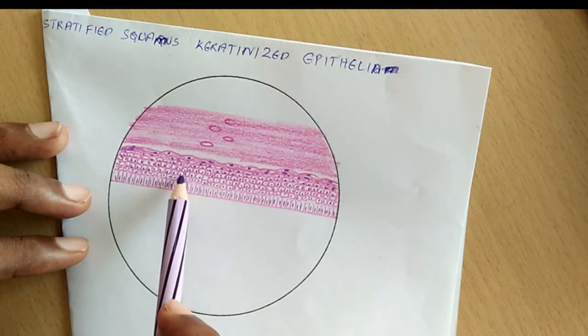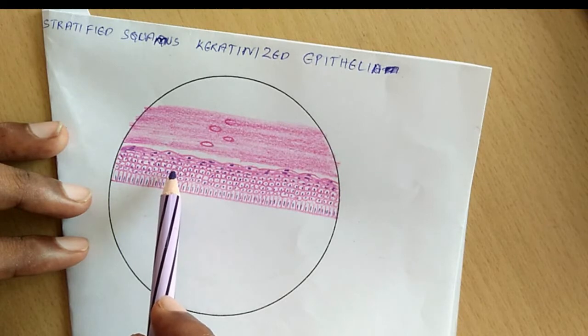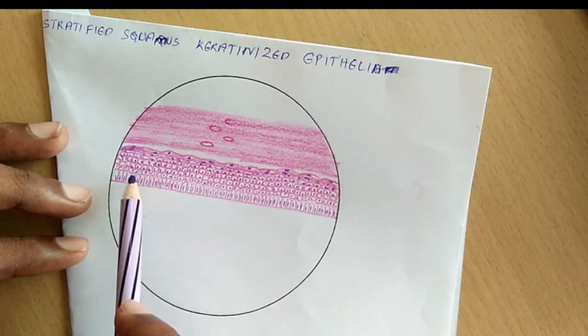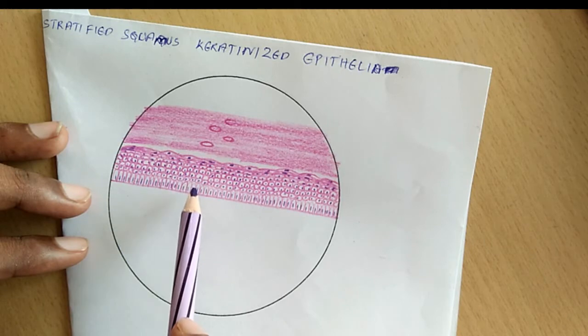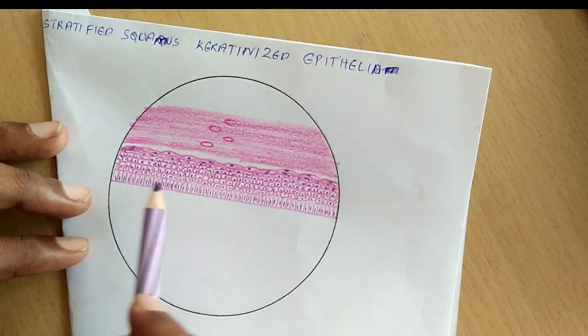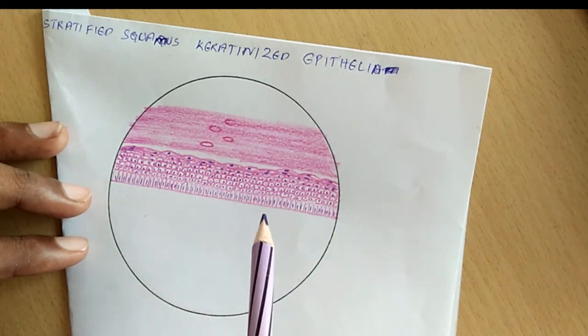You can notice one thing, in stratified epithelium, the cells which are above the basal layer are not going to touch the basement membrane. Only the basal cells touch the basement membrane.